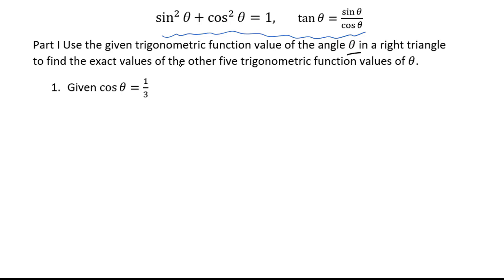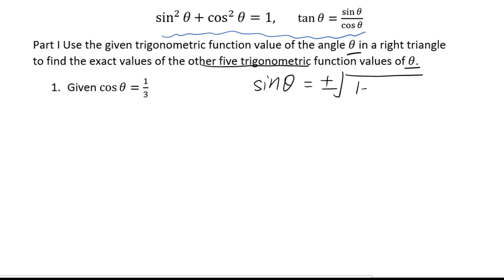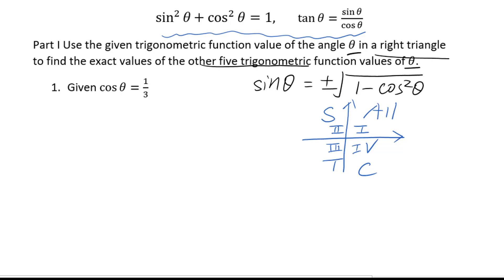Example 1: Use the given trigonometric function value of angle theta in a right triangle to find the exact values of the other 5 trigonometric function values of theta. Given cosine theta equals 1/3. Since theta is in a right triangle, theta is an acute angle, which means it's in the first quadrant, so all trig functions will be positive.